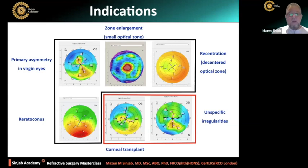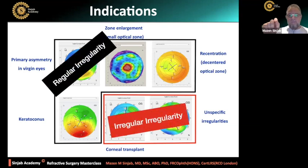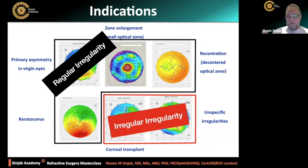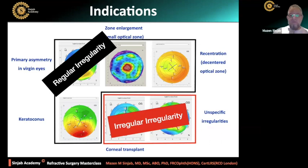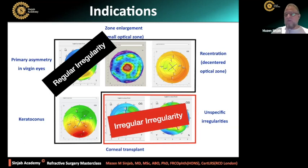The first group is regular irregularity, while the other group is irregular irregularity. In the irregular irregularity, there are many patterns, many shapes. In the regular irregularity, there is a specific shape — it is irregularity but has a specific shape. This is why it is called regular irregularity. The reason for this classification is so that we can decide which treatment is the best.